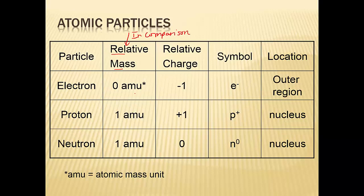The electrons have — we say they have zero mass. What contributes most of the mass? The protons and neutrons contribute most of the mass. You need to know the charges: electrons are negative, protons are positive, neutrons are neutral. The electrons are outside; protons and neutrons are in the middle. That is why we say most of an atom's mass is in the nucleus, because that's where the protons and neutrons are and they are the particles that have the mass.